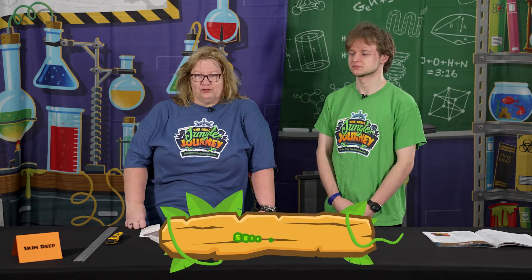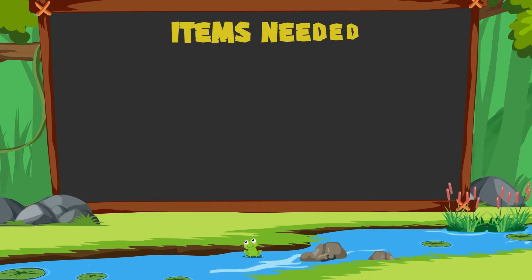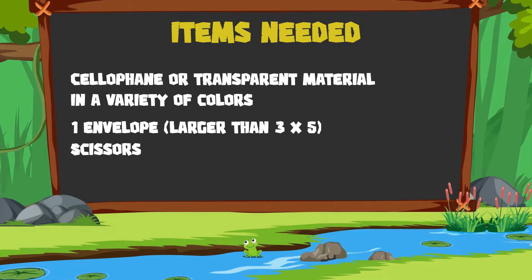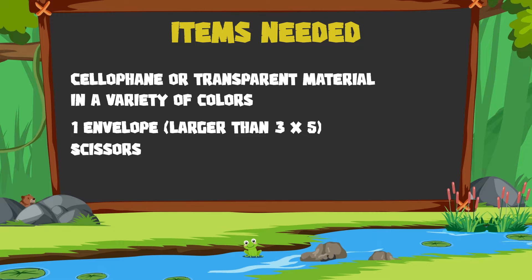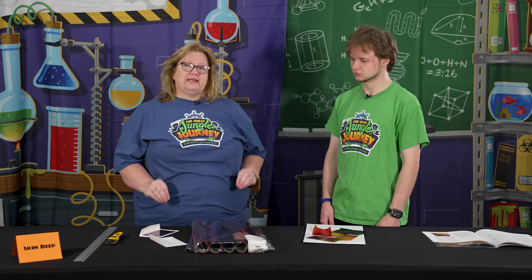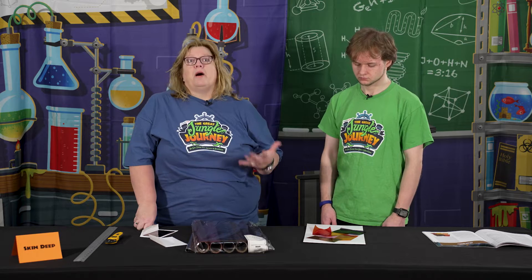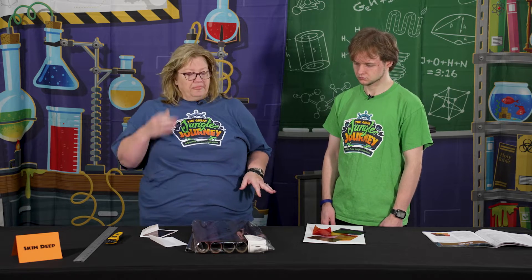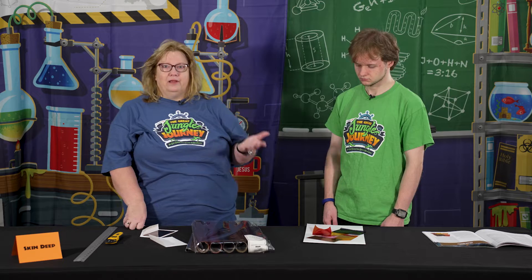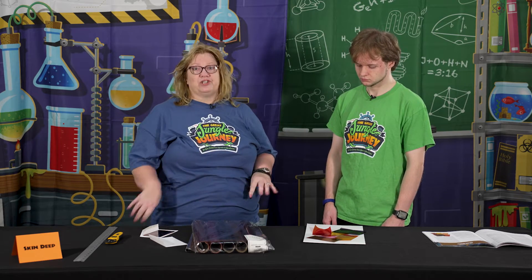This is day three of Jungle Journey Science: Skin Deep. This lab had to do with the fact that when the flood waters receded, God had told the eight people that got off the ark to scatter and repopulate the earth. They did repopulate but they did not scatter, so in order to make them scatter, we had the whole situation at Babel where God confused the languages.